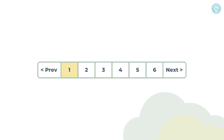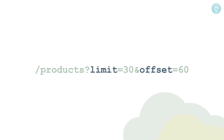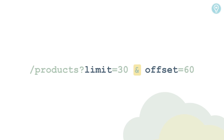Pagination is a process used to divide a large dataset into smaller chunks. To request a specific page, a query parameter can be added to the endpoint URL. Query parameters, or query string, are defined as a question mark followed by the parameters and their values. The client can pass multiple query parameters in the URL, separated by an ampersand. Query parameters can also be used for sorting and filtering data.